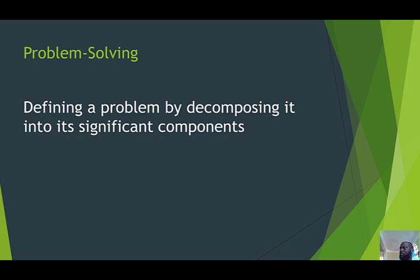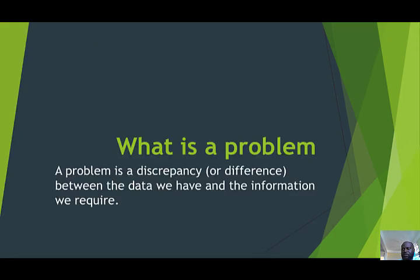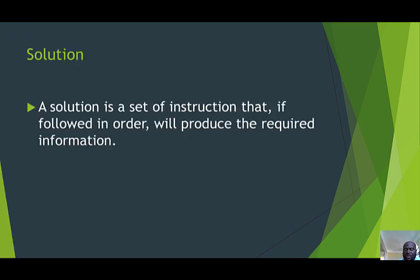So far we looked at problem solving — specifically problem solving using a computer. We said that the problem is a discrepancy between the data that we have and the information that we require. We also looked at what a solution is: a set of instructions that, if followed in a particular order, will produce a desired result.